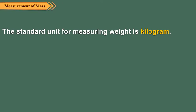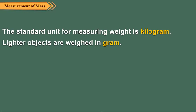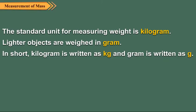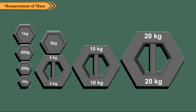The standard unit for measuring weight is kilogram. Lighter objects are weighed in gram. In short, kilogram is written as kg and gram is written as g. There are 1000 grams in 1 kilogram. Some commonly used weights are shown here.